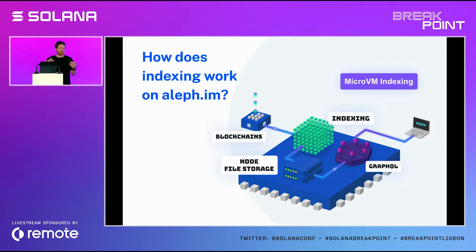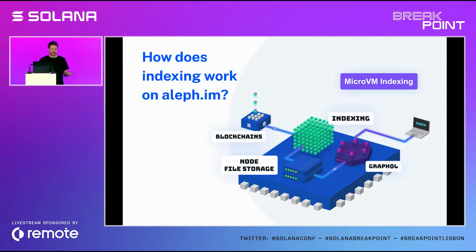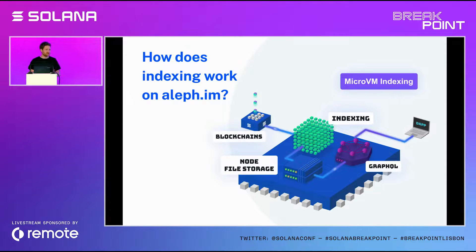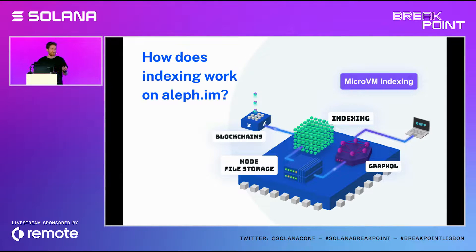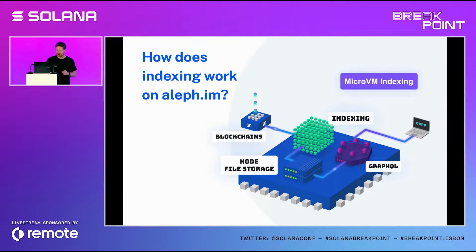How does our indexing work on Aleph.im? We've zoomed in inside our micro VM. When you start your application, it will index data from the blockchain — it gets the current state and then goes back in time to get history. Instantly on launch it gets the current state, then fetches historical data. It stores everything inside the node's local file storage, which is persisted between multiple launches of the same node, and then exposes the data through GraphQL. We can also have a snapshot system to restart from a previous point for faster startup. If your application has a spike in demand, the network will spawn multiple instances across the whole network for you.